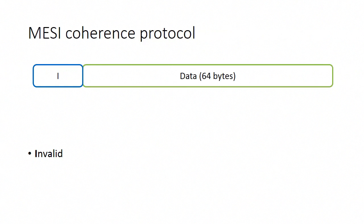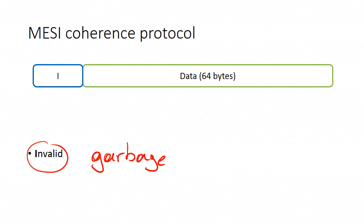The first state is the invalid state, which is actually the same as the invalid state in a cache line without coherence. If a cache line is in the invalid state, then the data contained by the cache line is garbage and cannot be used by the core.